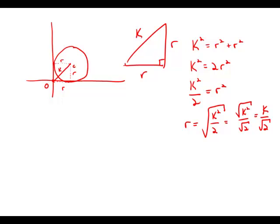So the radius is K divided by the square root of 2, and this is answer choice B.